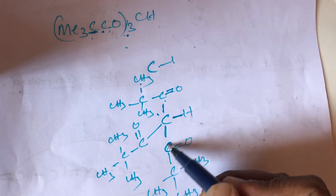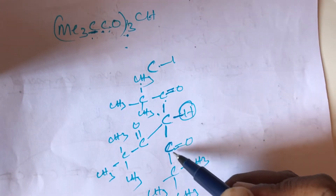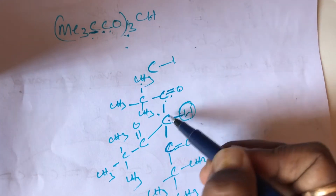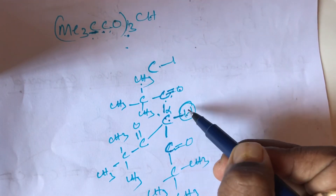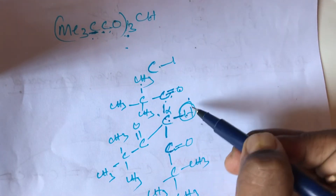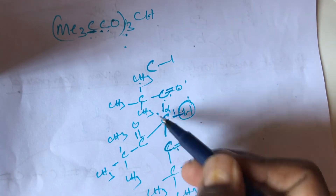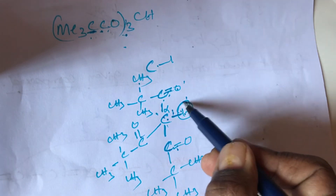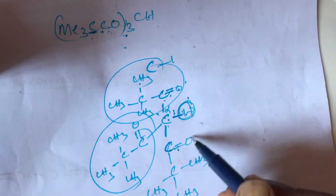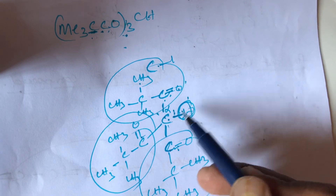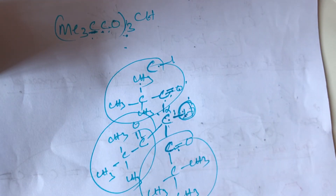This keto group is beside an alpha carbon with alpha hydrogen present. Each keto group is beside an alpha carbon, and the common central carbon has only one alpha hydrogen. So all three keto groups share this common carbon with only one alpha hydrogen, and any one of them can participate in tautomerism.